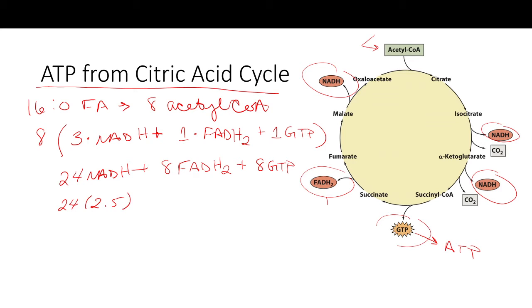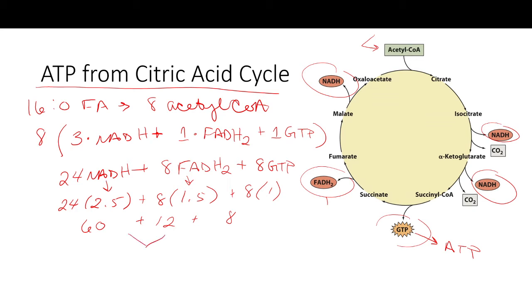Converting those to ATP: 24 NADH × 2.5 = 60 ATP, plus 8 FADH2 × 1.5 = 12 ATP, plus 8 GTP × 1 = 8 ATP. Combining all of that: 60 + 12 + 8 gives us 80 molecules of ATP total from the citric acid cycle.